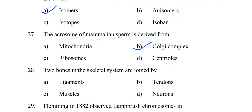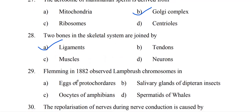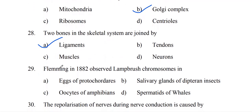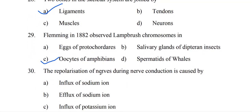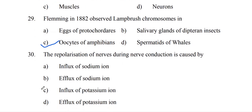Two bones in the skeletal system are joined by ligaments. Fleming in 1882 observed lampbrush chromosomes in oocytes of amphibians. The repolarization of nerves during nerve conduction is caused by the influx of potassium ions.